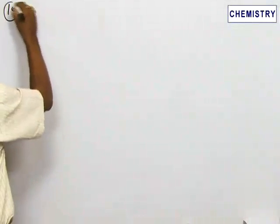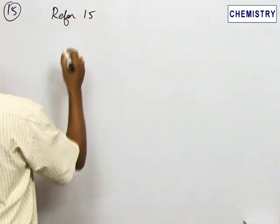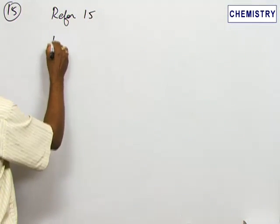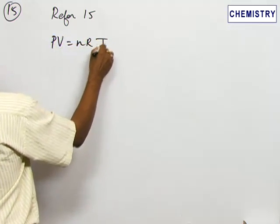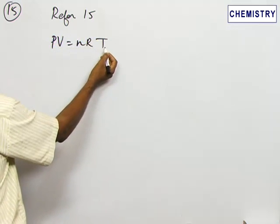Problem number 15, refer to problem 15. This is again based upon the ideal gas equation, that is PV equals nRT. P is pressure, V is volume, n is number of moles, R is the gas constant, and T is temperature.